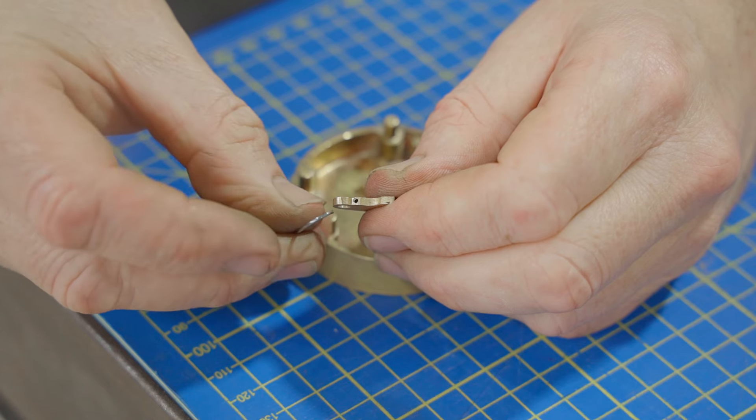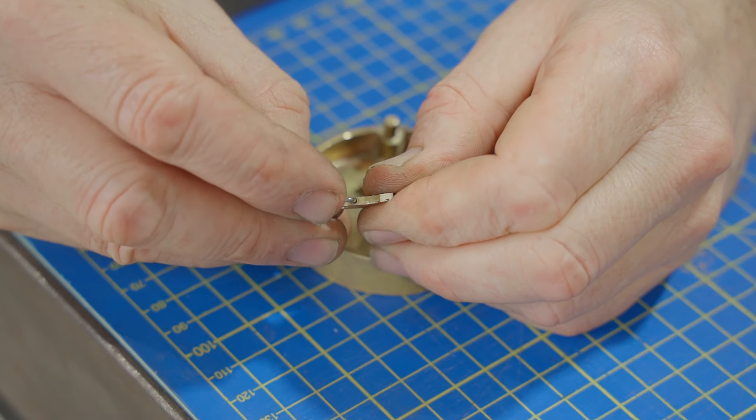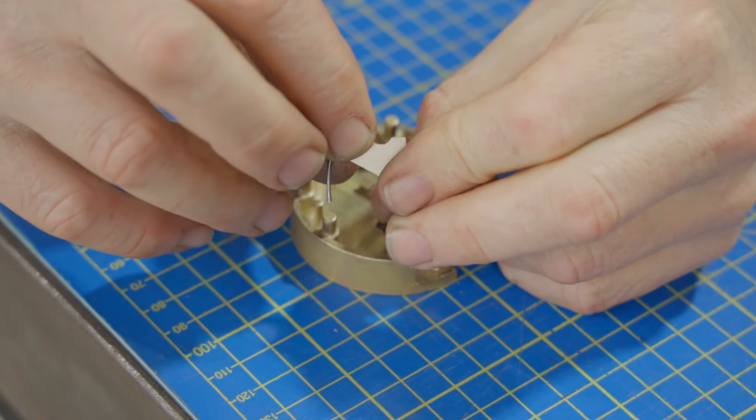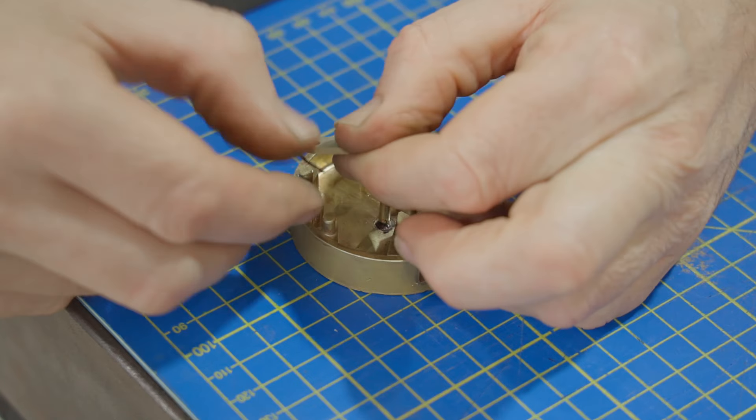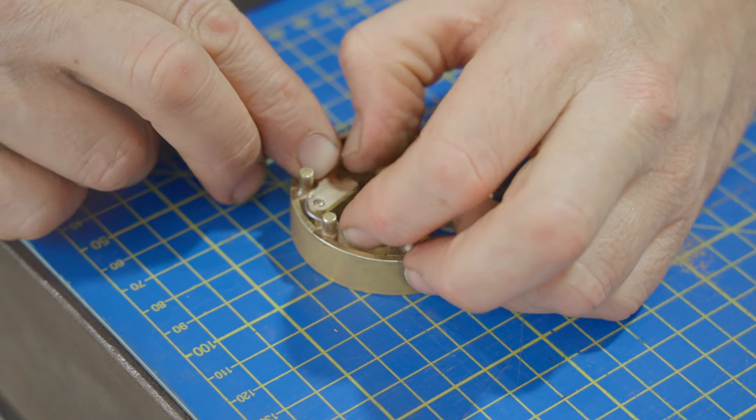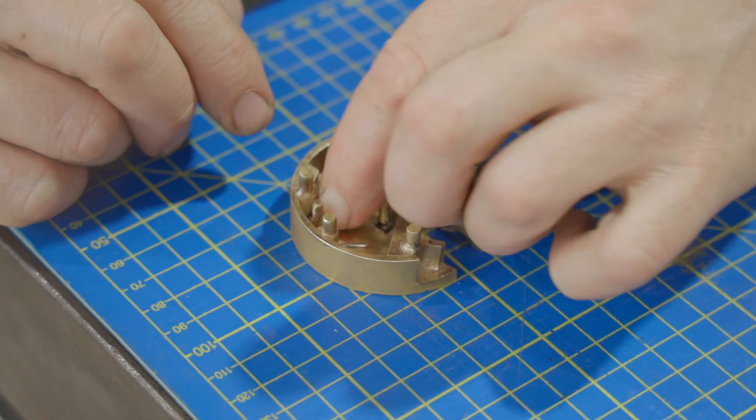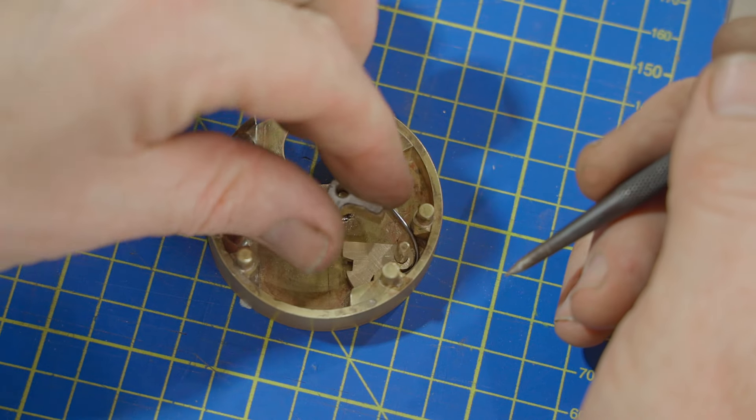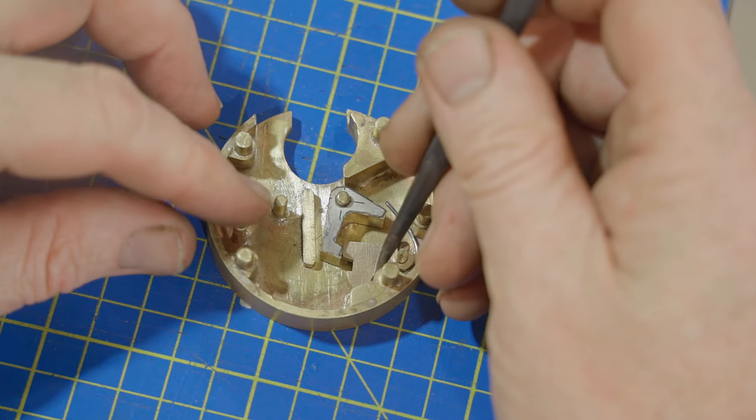I can't find my decent side cutters anywhere so I'm using these cheap ones and they need a helping hand as this wire is extremely tough. The spring doesn't need much tension, it just needs enough to do its job. I'll put the bolt and the shackle in and see how it works.